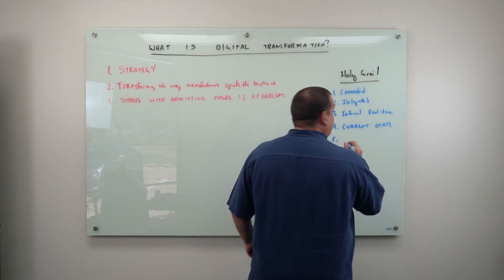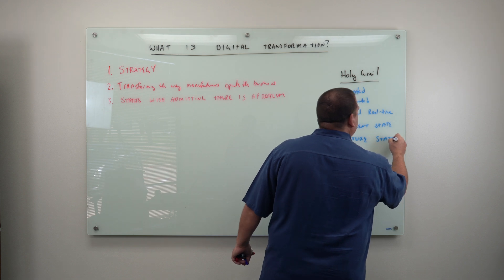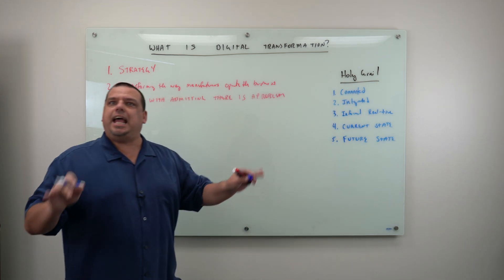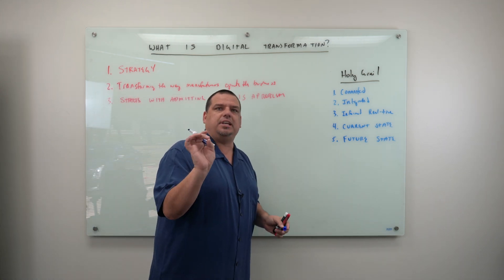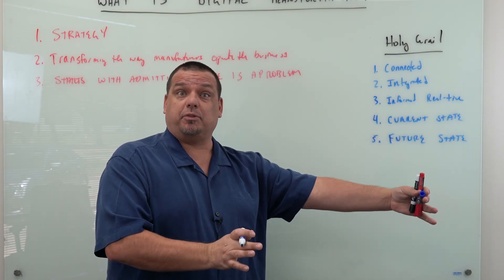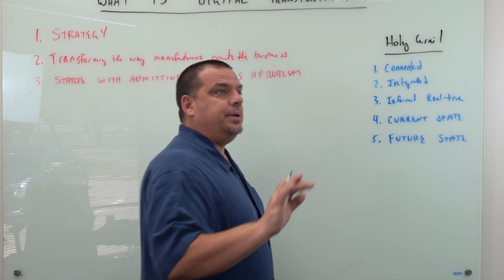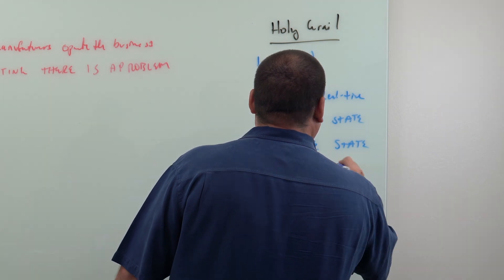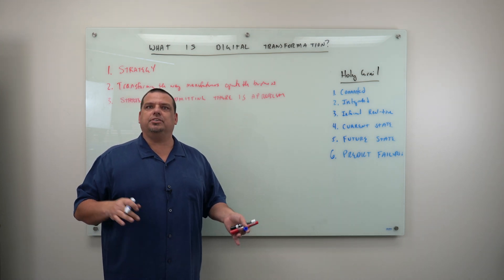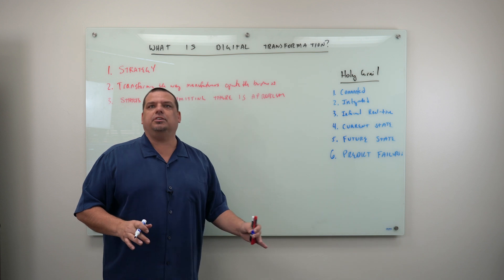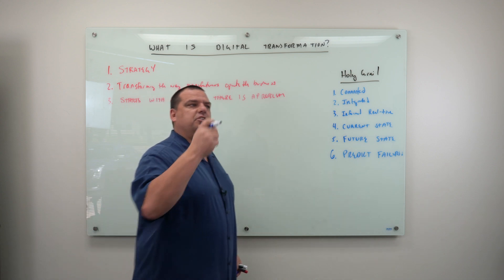Here's where the stuff everyone's trying to achieve comes in — you know the future state. This is where machine learning, AI, and predictive analytics come in. A holy grail manufacturer knows the future state based on current state and past performance; we're able to predict the future state accurately. Number six, we can predict failures — not just machine failures, but operational failures, scheduling failures, and raw material failures.